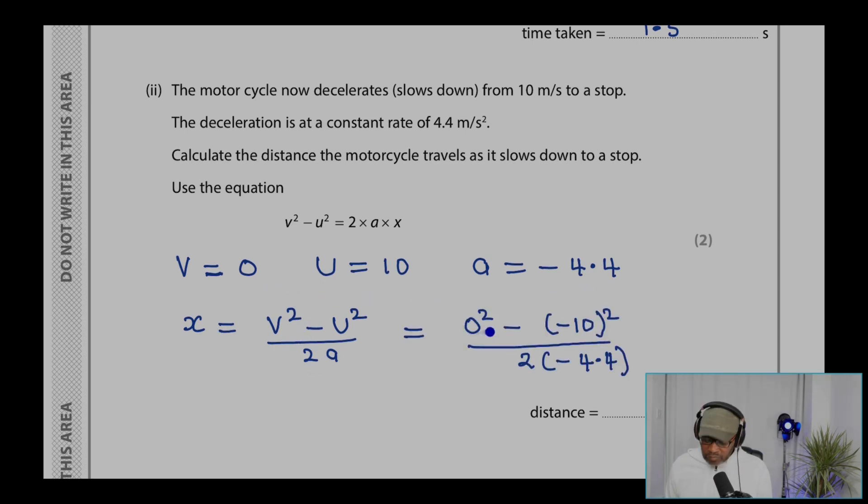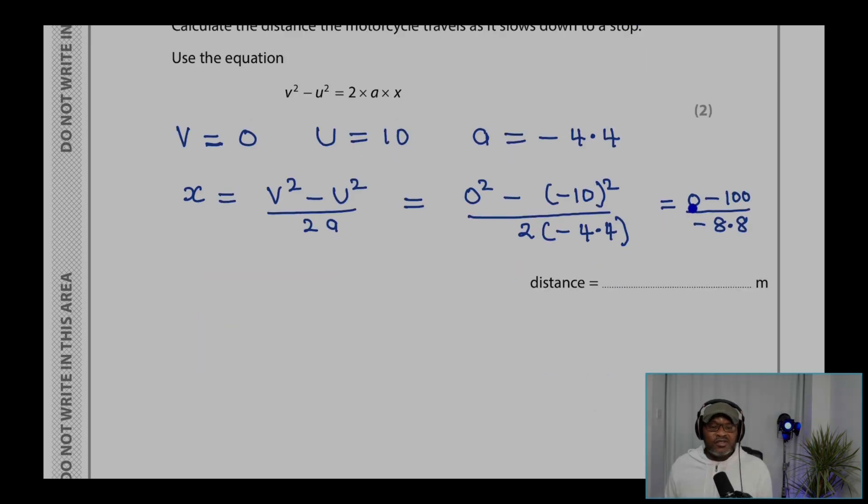Plugging the values in there, we get zero squared minus bracket minus 10 close bracket squared divided by two into bracket minus 4.4 close bracket. And that equals zero minus 100 over minus 8.8.